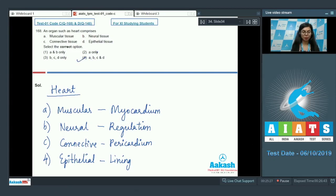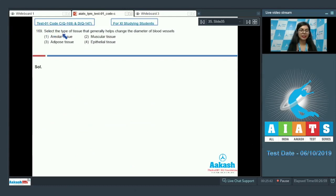The correct option here would be option number 4, A, B, C, and D. Answer is 4. Question 169: Select the type of tissue that generally helps change the diameter of blood vessels. Areolar tissue, muscular tissue, adipose tissue, epithelial tissue.